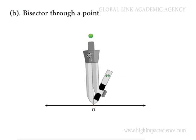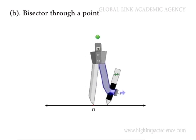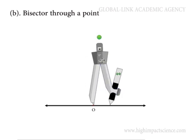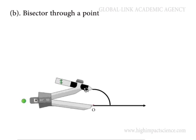Next we put the needle of the compass at the point. Then we choose a comfortable radius and make a semicircle.